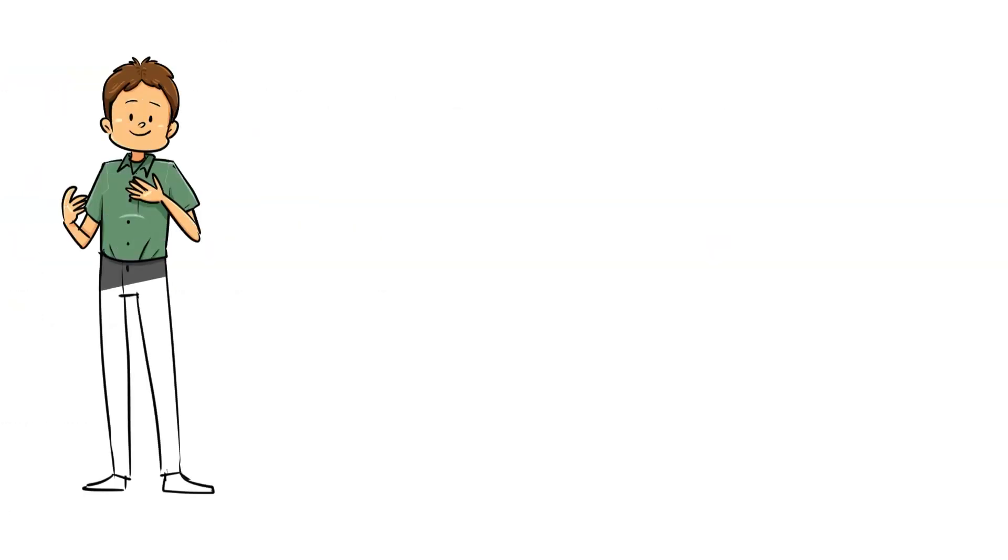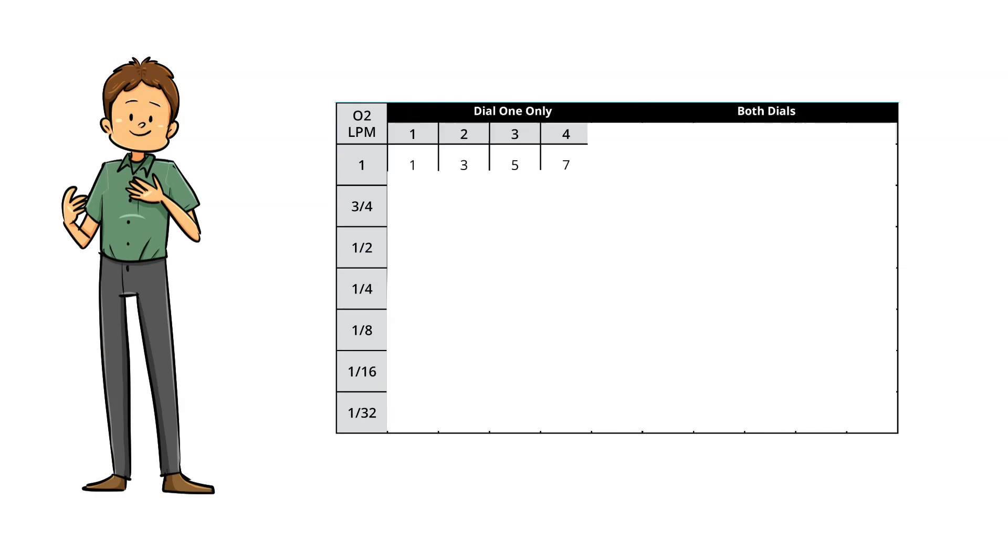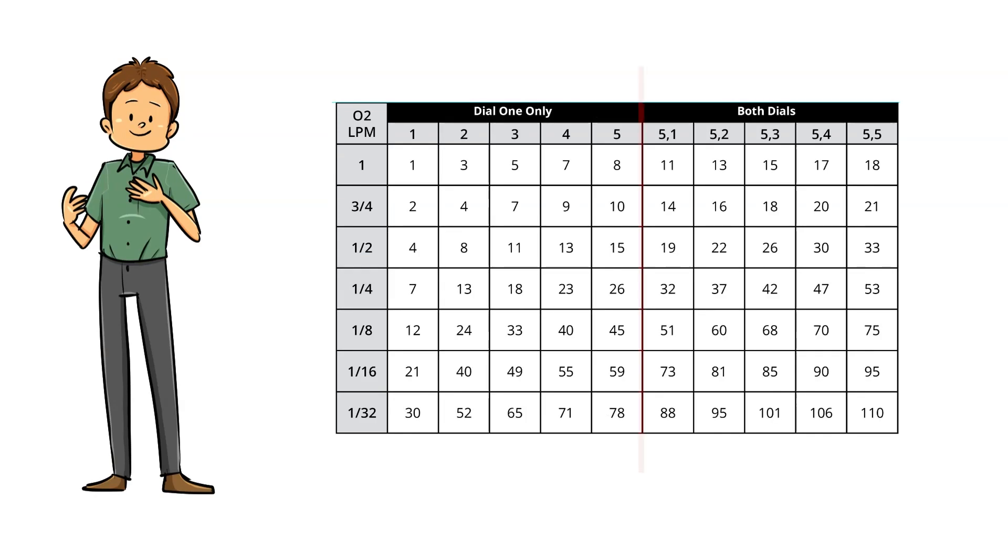For the O3 Elite Dual, you have two dials on the ozone generator. Therefore, on the gamma chart, you'll see that the top horizontal line is split. The left side is used with only one dial turned on, while the right side has both dials turned on.